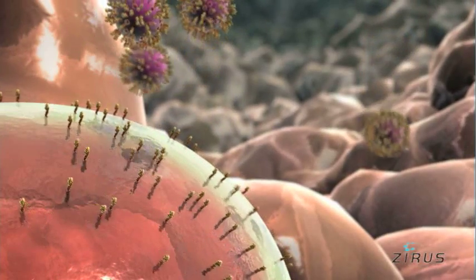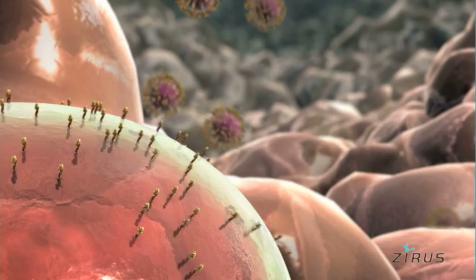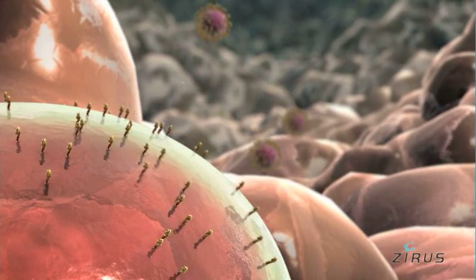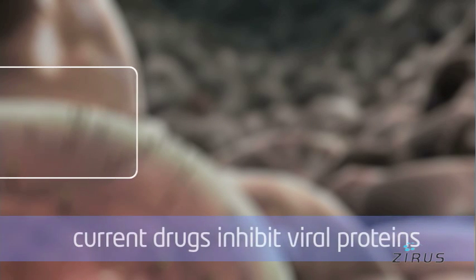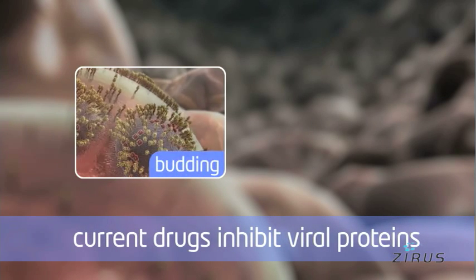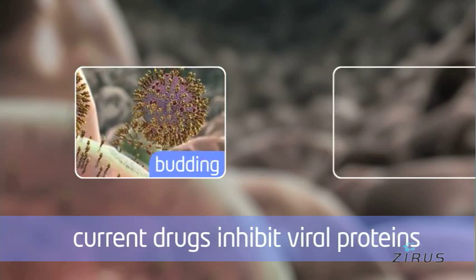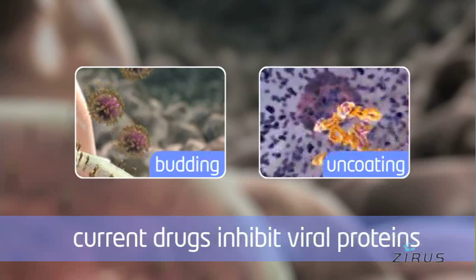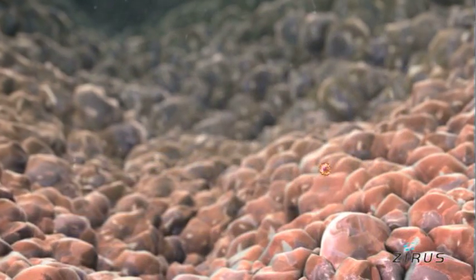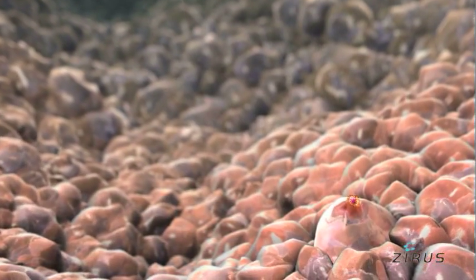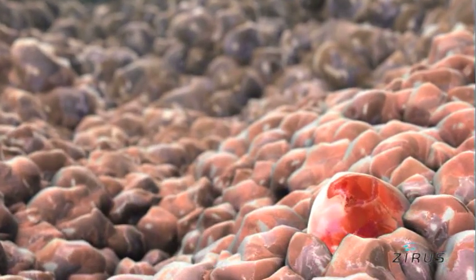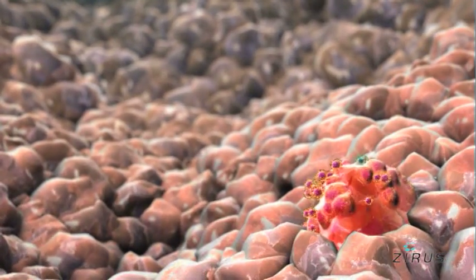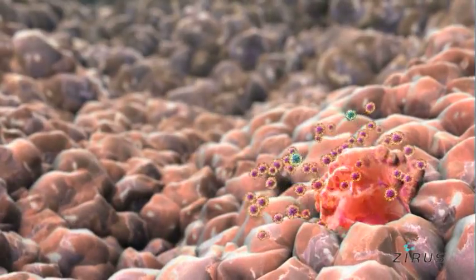Due to the limited number of viral proteins and nucleic acids that can be targeted, the development of effective antiviral agents is especially challenging. Drugs currently used to treat influenza act by inhibiting viral proteins involved in budding and uncoating. However, these antiviral drugs are of limited effectiveness and like antiviral drugs used to treat HIV and other viruses, are prone to development of viral resistance through mutation to avoid the interaction with the drug.